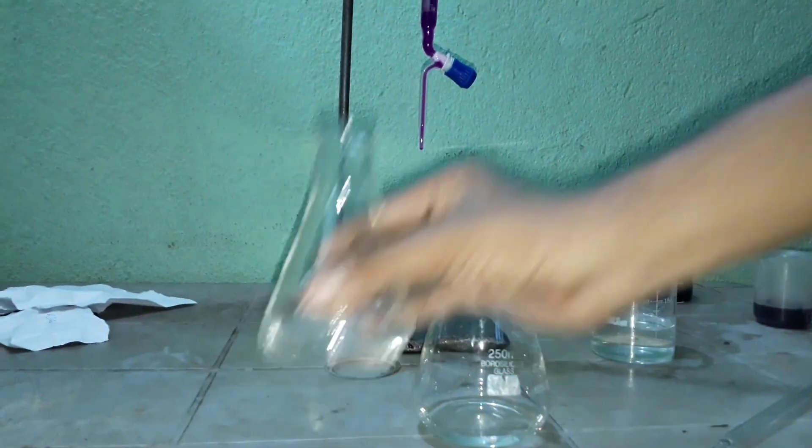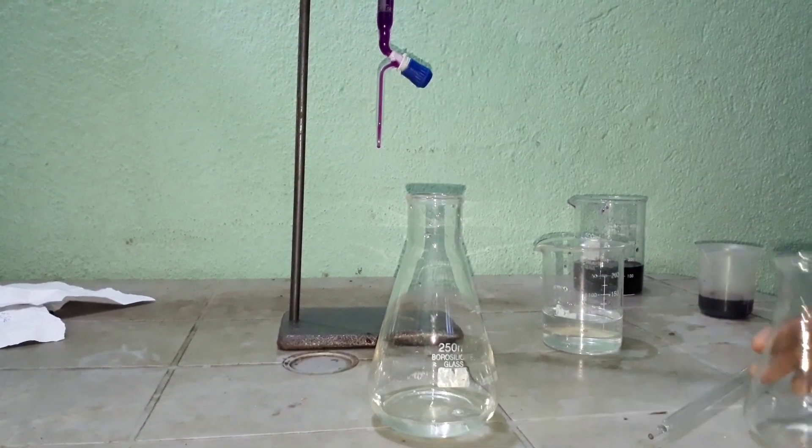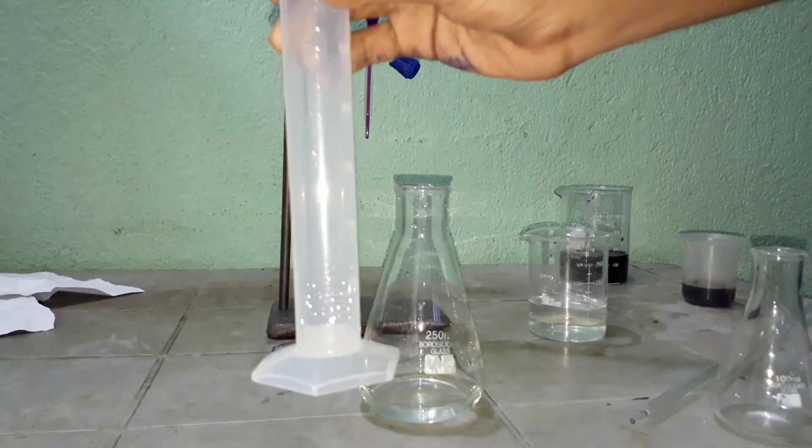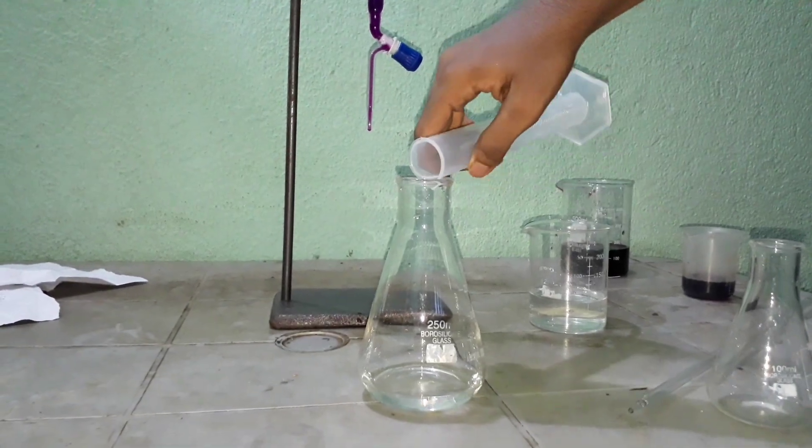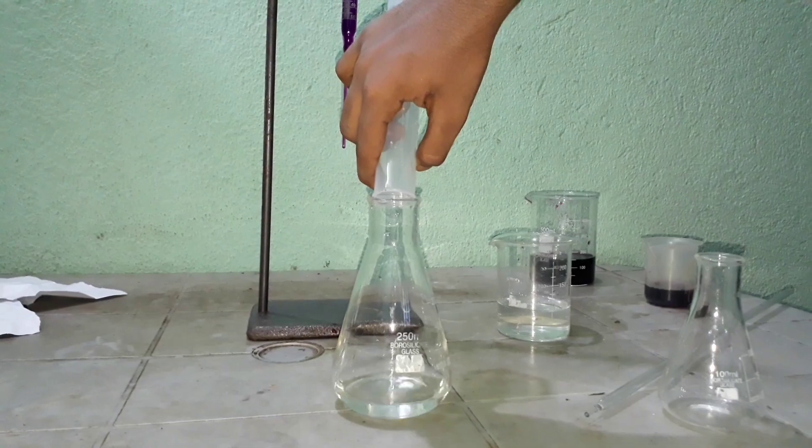Then the Mohr salt solution which was taken earlier in the conical flask is mixed with 3 ml of H3PO4 and 15 ml of 2 normal H2SO4 solution.